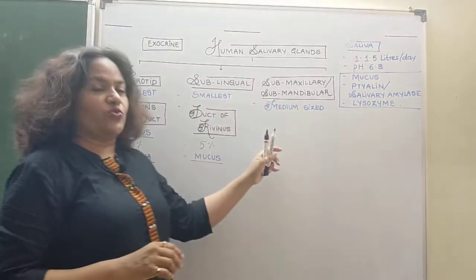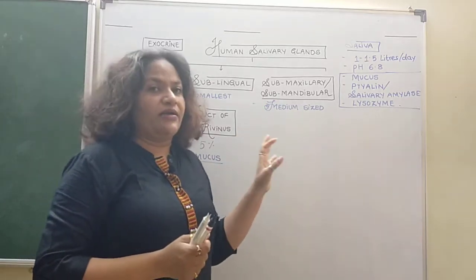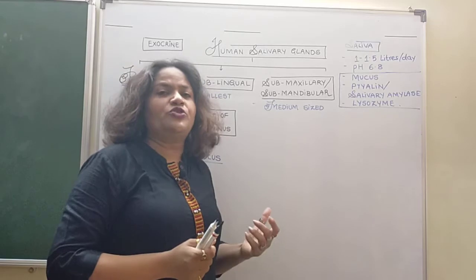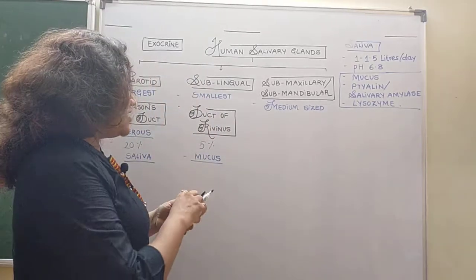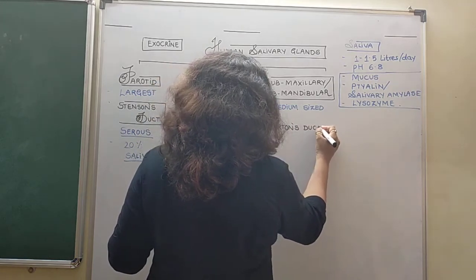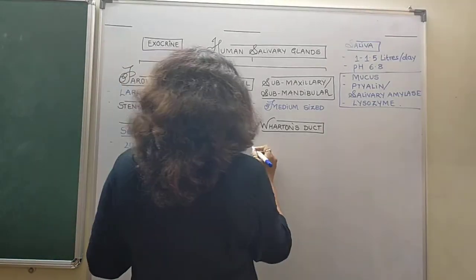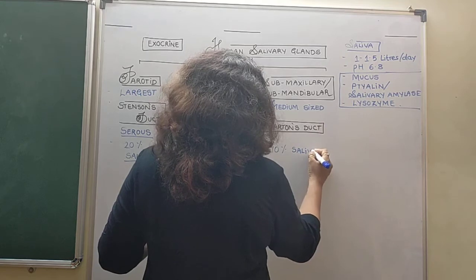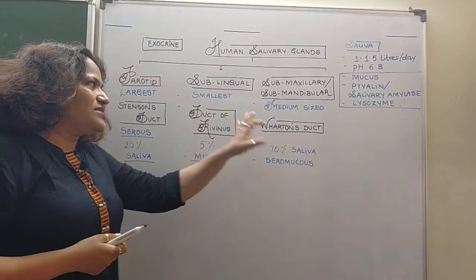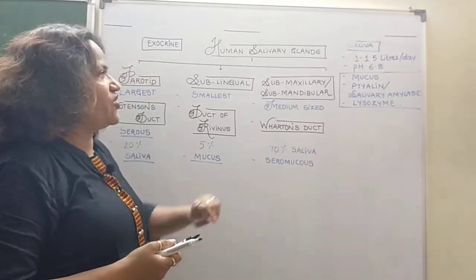The submaxillary or submandibular salivary glands are present at the angle of the lower jaw but open below the tongue. 'Sub' means below, 'maxilla' is the upper jaw, and 'mandible' is the lower jaw. These glands open by means of Wharton's duct into the oral cavity below the tongue, and they contribute almost 70% to the saliva. This gland is described as seromucous in nature because its secretion contains both amylase enzyme and mucus.